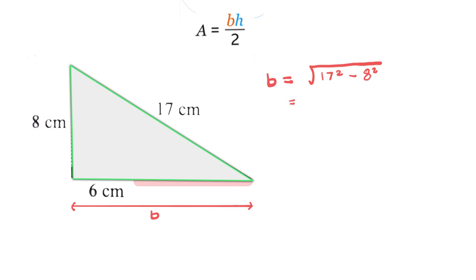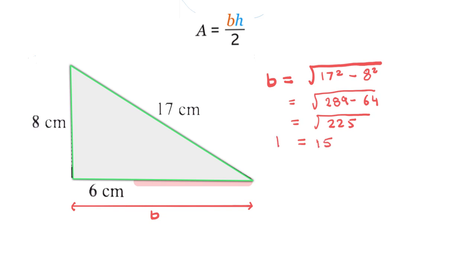That turns out to be the root of 289 take away 64, which ends up to be the root of 225. The root of 225 is 15, so our base here is 15. But that's the big triangle.